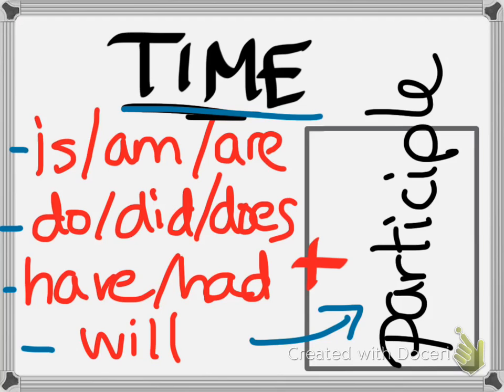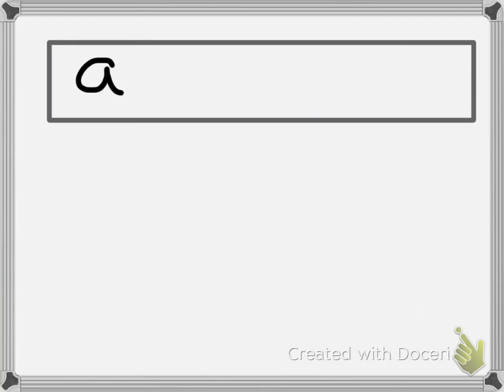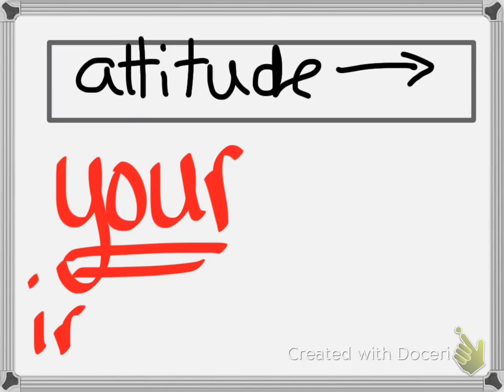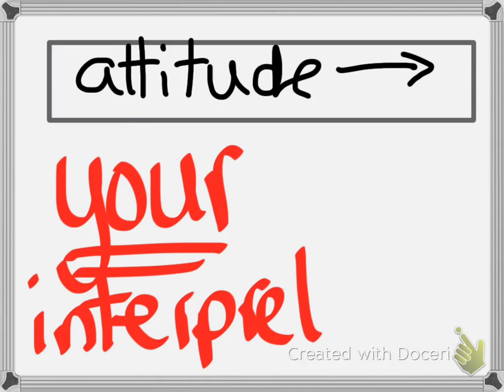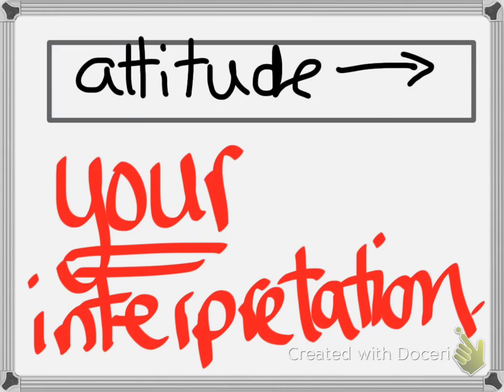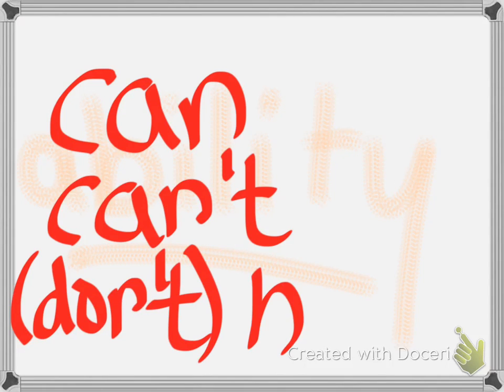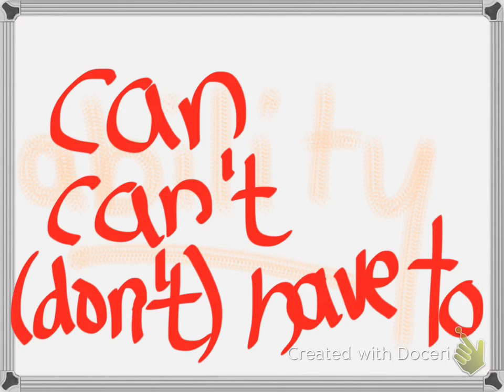But they're not the only auxiliaries that exist because we also have auxiliaries that show our attitudes or our interpretations about something that's happening. And these are the modal verbs that tend to give people a lot of trouble. You're probably familiar with the idea of can and can't for ability, and also the alternative don't have to if you do need to express past or future.